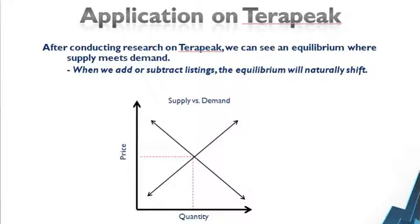Using Terapeak, we can view historical stats to see where the market equilibrium is set for a given product. Furthermore, by doing this, we can estimate where price, sell-through rates, and quantity will go should we decide to add additional supply to the market by uploading listings onto eBay. It is important to note that we must treat our auctions and fixed price listings separately, as the buyer base may not completely overlap.